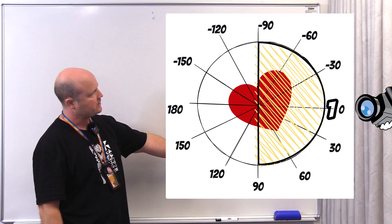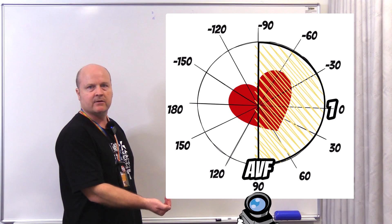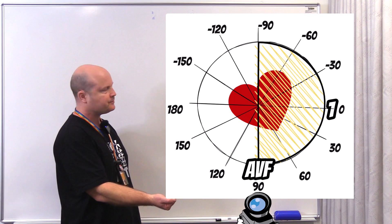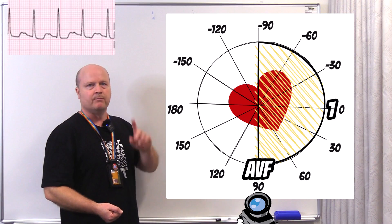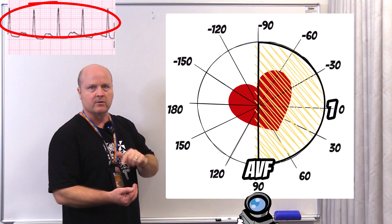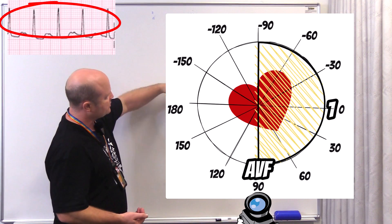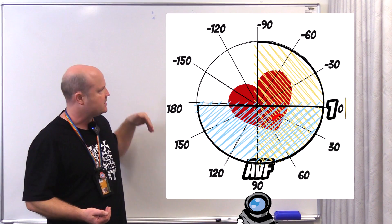Okay, then if we look at lead AVF. AVF was looking from about positive 90 degrees, so right underneath. And if we look at the QRS complex, if it's mostly up, that means the direction of travel is going toward that positive electrode. So then we can shade in from zero to 180 down, and the axis is going to be somewhere there.